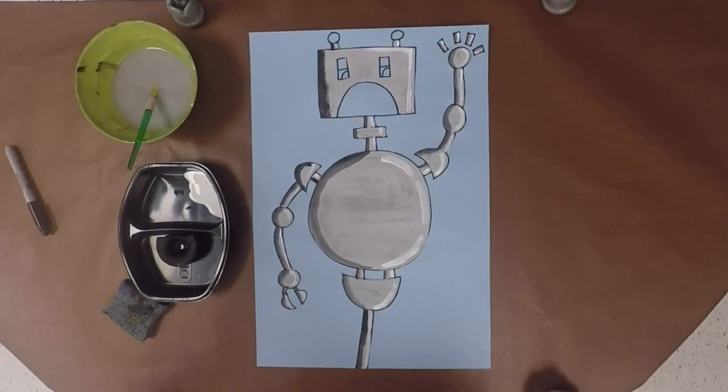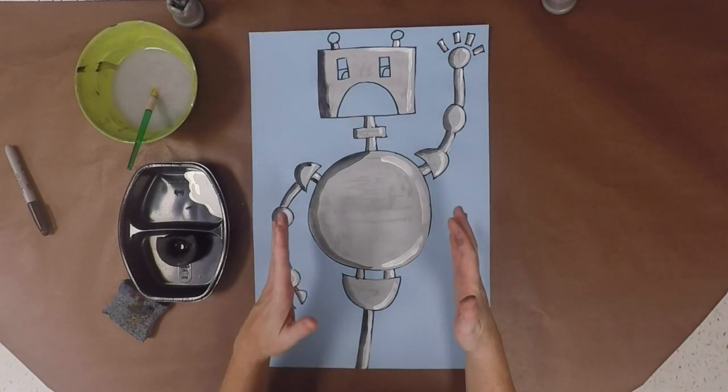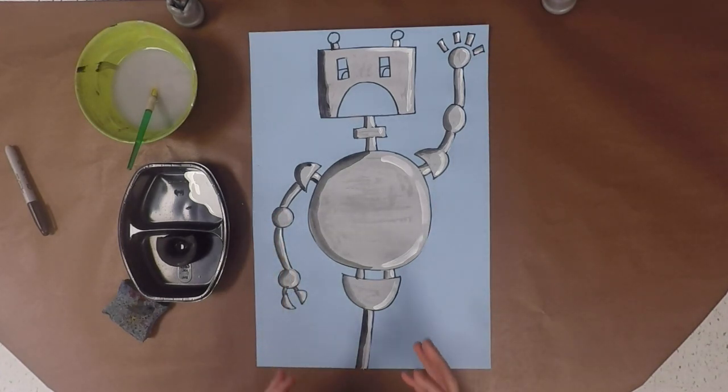Now we have a robot that no longer looks flat. He looks more three-dimensional because he has highlights and shadows, which has turned the shapes we used into forms. Now, after all of this is dry, we're going to get busy adding some final details so that our robot really comes to life.